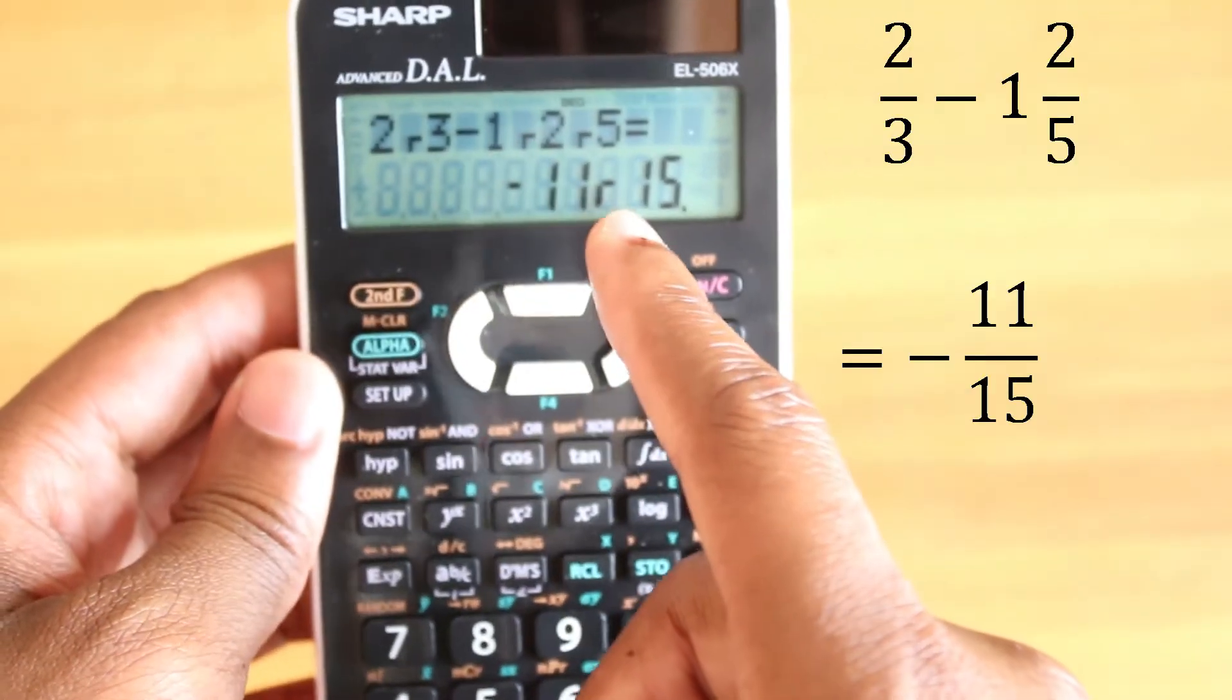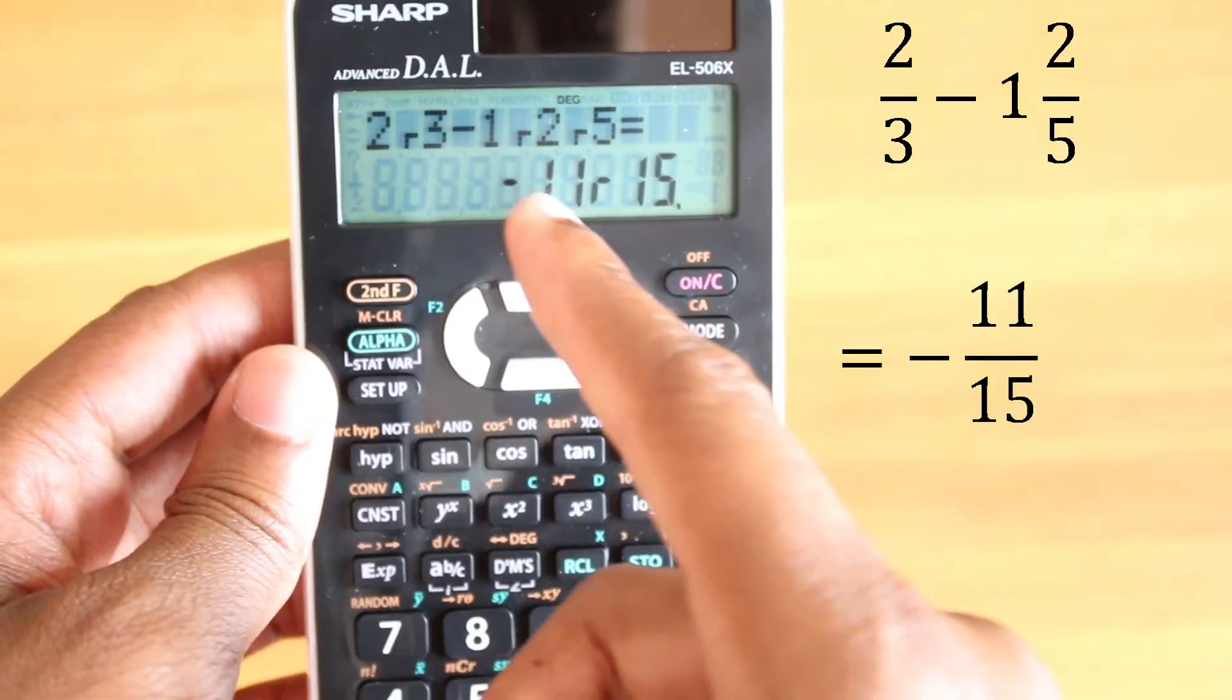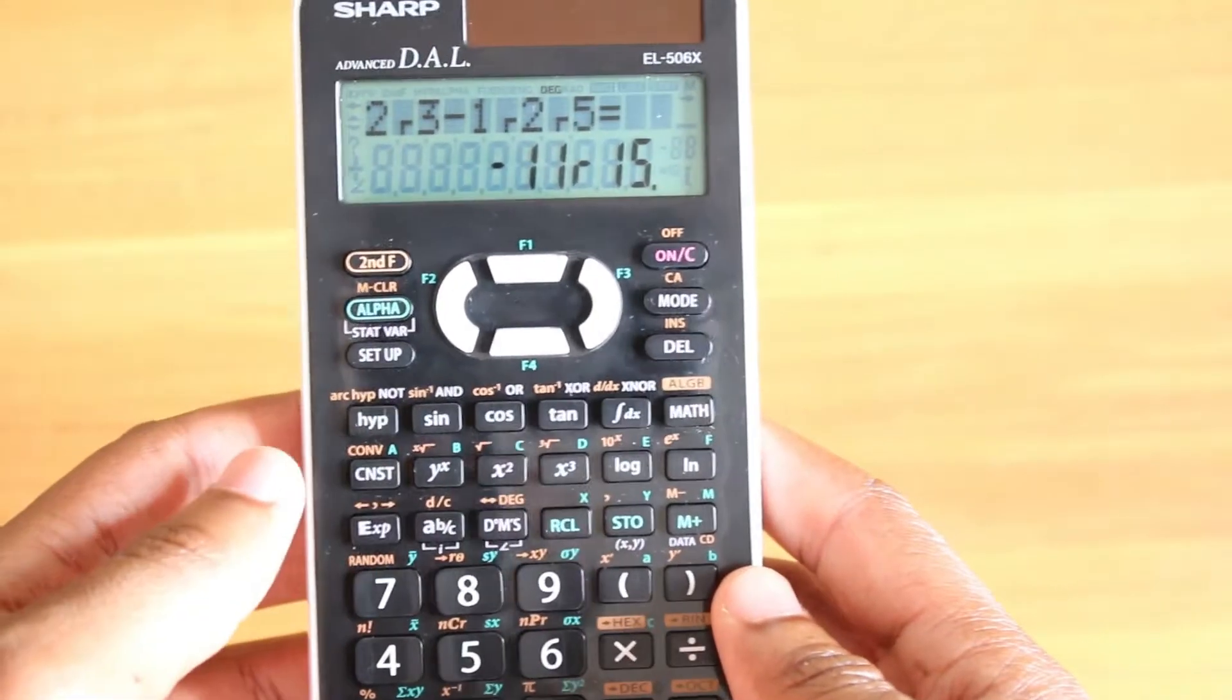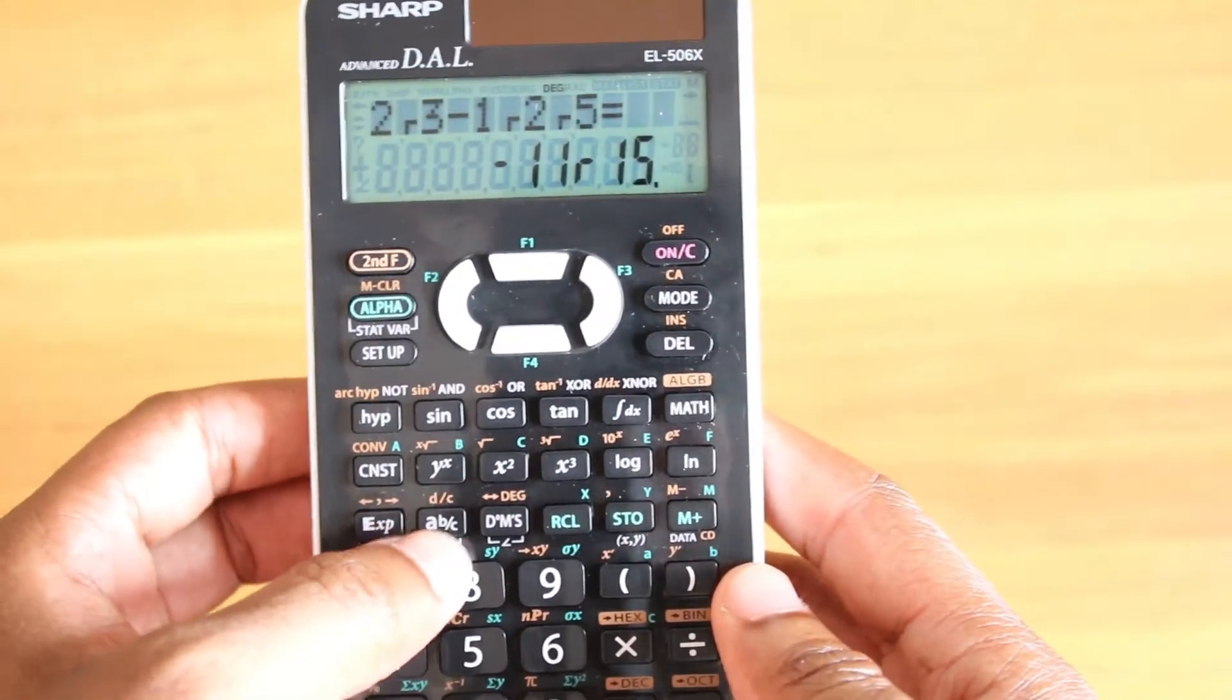Which is like you can envision this as a fraction that has a line over there, 11 over 15, negative 11 over 15. And if you want to change it back to decimals, you can just press this function.